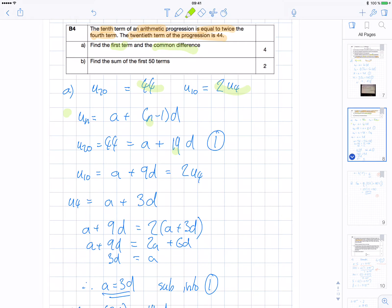So now, I let u10, this is u10. This is u4. And I do two lots of it upon the brackets. 2 times a is 2a. 2 times 3 is 6, so 6d. And I find a in terms of d. So a equals 3d.